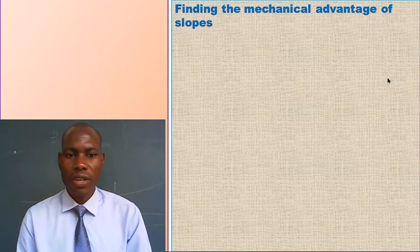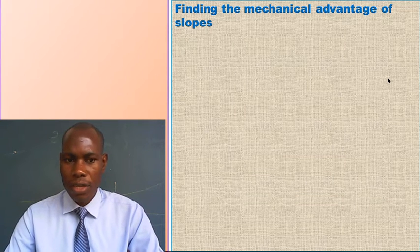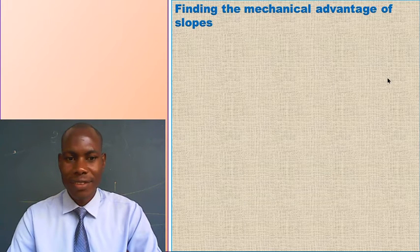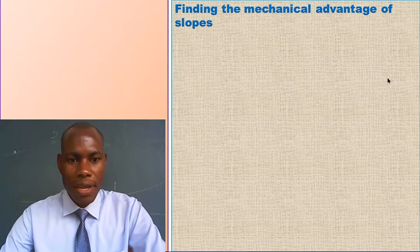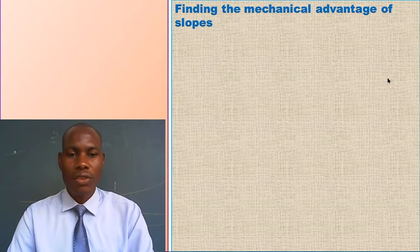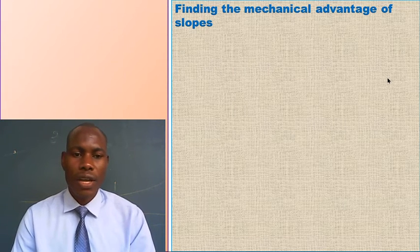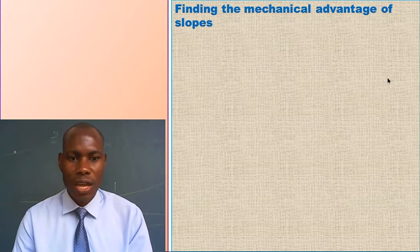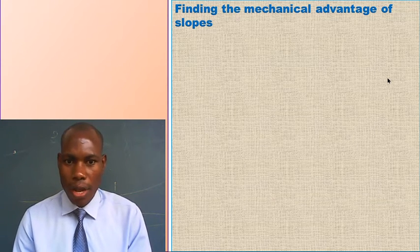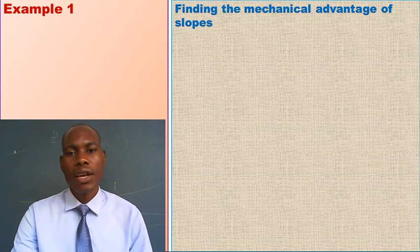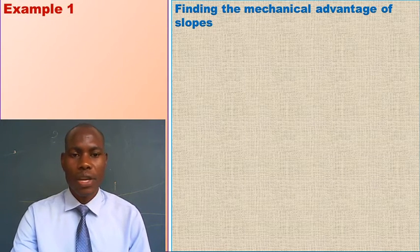Remember, in our previous lesson, we learnt about mechanical advantage. Can somebody tell us what mechanical advantage is? We said that mechanical advantage is the ratio of the load to the effort. Or, we can also say that mechanical advantage is the number of times a machine simplifies work. Today, we are going to find the mechanical advantage of slopes or inclined planes.